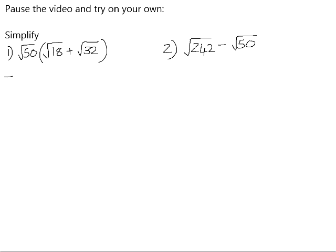Number 1. Before we multiply here, we're going to just simplify all of these surds. The square root of 50 is the square root of 25 times 2, which will simplify to 5 root 2. The square root of 18 is the square root of 9 times 2, which will simplify to 3 square root 2. And 32 is 16 times 2, which simplifies to 4 square root 2.